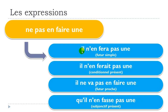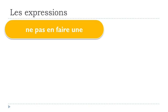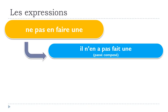One more time — future simple: il n'en fera pas une. Conditionnel présent: il n'en ferait pas une. Future proche: il ne va pas en faire une. Subjonctif présent: qu'il n'en fasse pas une.